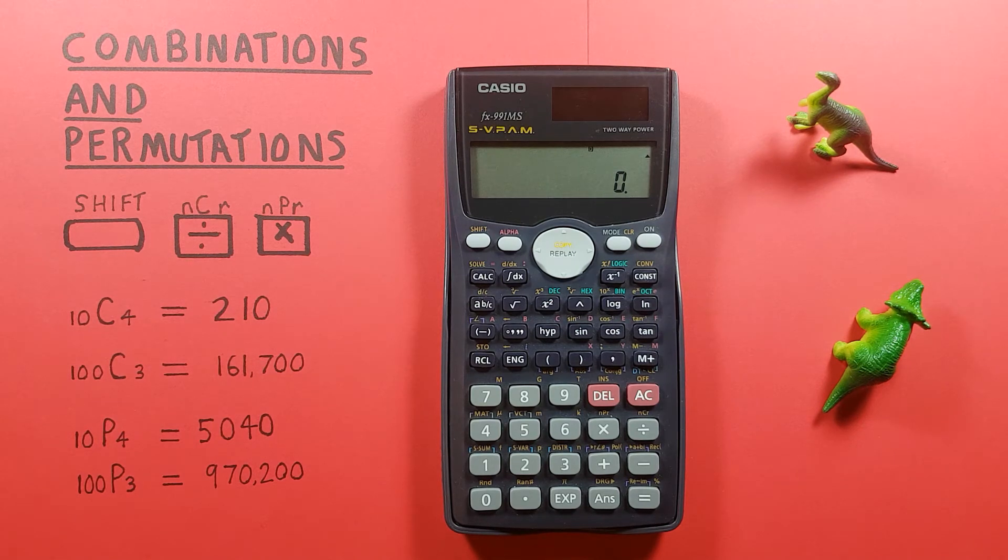If we want to do permutations, in which the order that the objects are selected does matter, we use the shift function of the multiplication key.